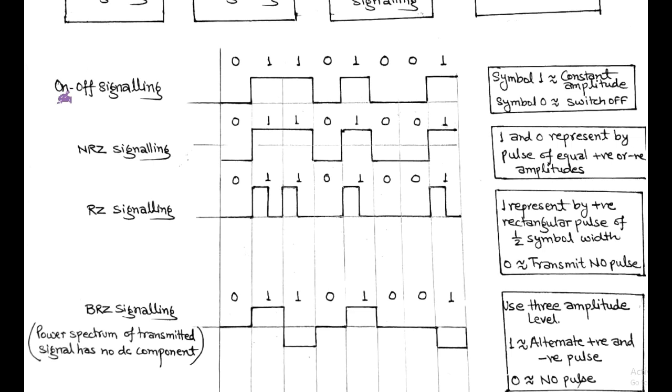The first line code is on-off signaling. In this, symbol 1 is represented by a constant amplitude, and symbol 0 is simply switch-off, means 0 amplitude. That is shown in first waveform.